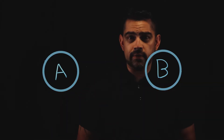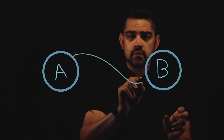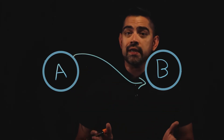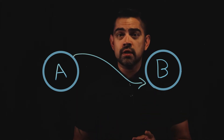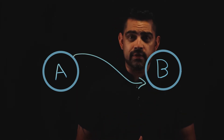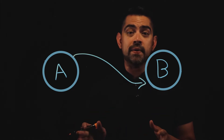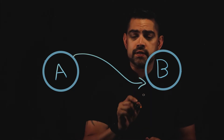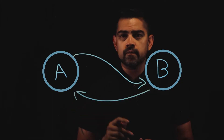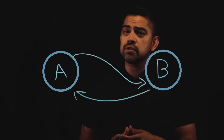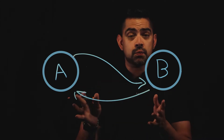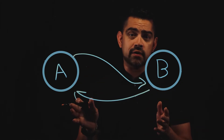You can think of an API as a doorway through which two systems are able to share data. In order for the sharing to happen, system A has to request something from system B. When system B receives this request, it checks to make sure that one, it has the resource, and two, that system A is authorized to have it. If all is clear on both fronts, system B will deliver on system A's request. But if something goes wrong, system B will also send back an error message. This process is known as the request-response cycle.